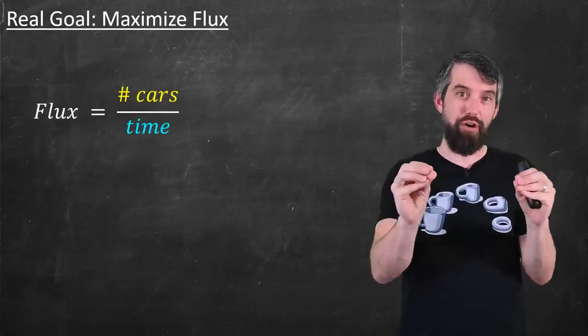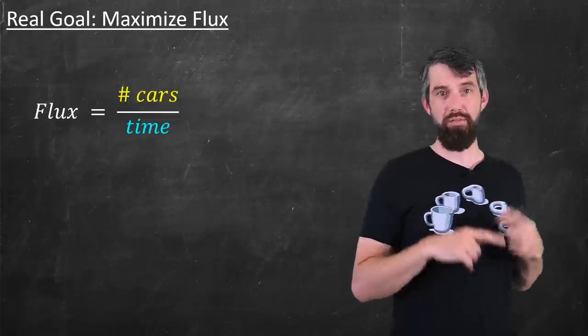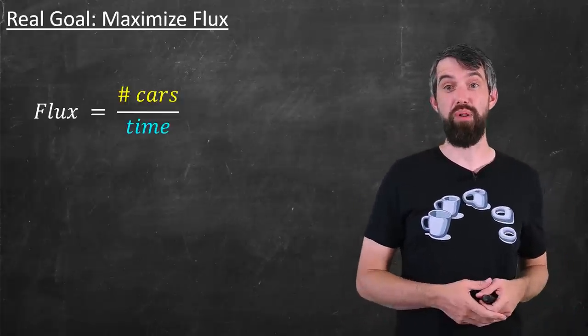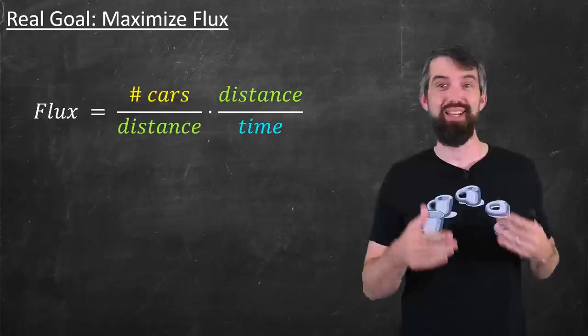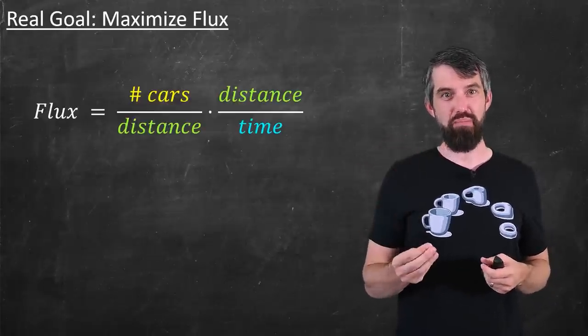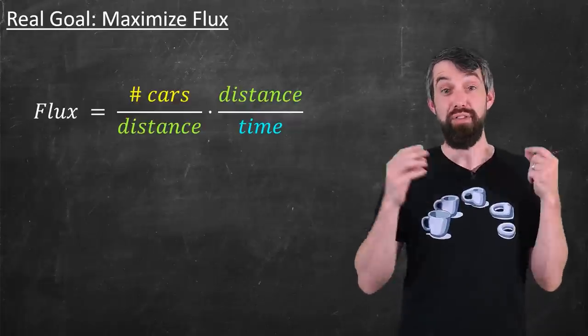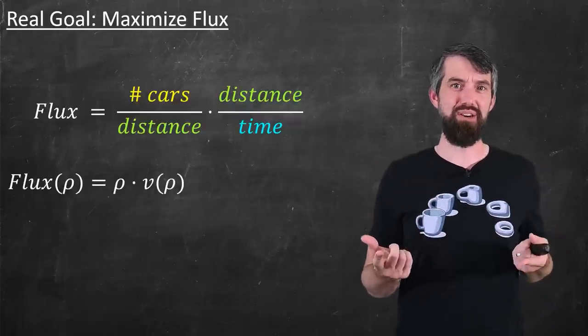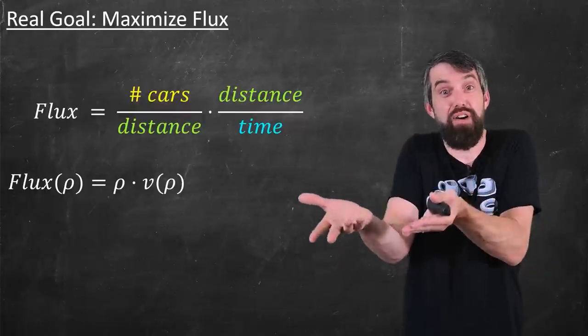The flux is the number of cars that are going to pass a point in some unit of time. Flux and density are related. For example, you could say that flux is therefore the number of cars in some unit distance, some unit distance and term over time. Distance over time is just velocity. And number of cars over distance, that was our notion of density. So the flux here is just going to be density times the velocity, which itself is a function of density.